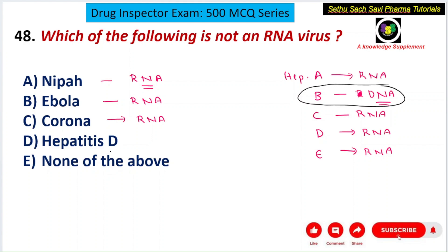Since the question asks which is NOT an RNA virus, and all listed options — Nipah, Ebola, Corona, and Hepatitis B — include Hepatitis B which is a DNA virus, the answer is E — none of the above, because all the others are RNA viruses and Hepatitis B is the DNA exception not listed among the RNA choices.